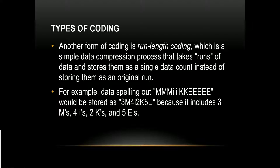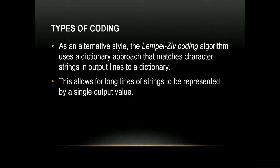For example, if you were to spell out M-M-M-I-I-I-I-I-I-I-I-K-K-E-E-E-E-E, one way of storing that would be '3M8I2K5E.' That should be fewer characters than spelling it all out individually — that would be 18 characters, versus 8 characters for '3M8I2K5E,' saving 10 bits of data. That's one type of methodology.